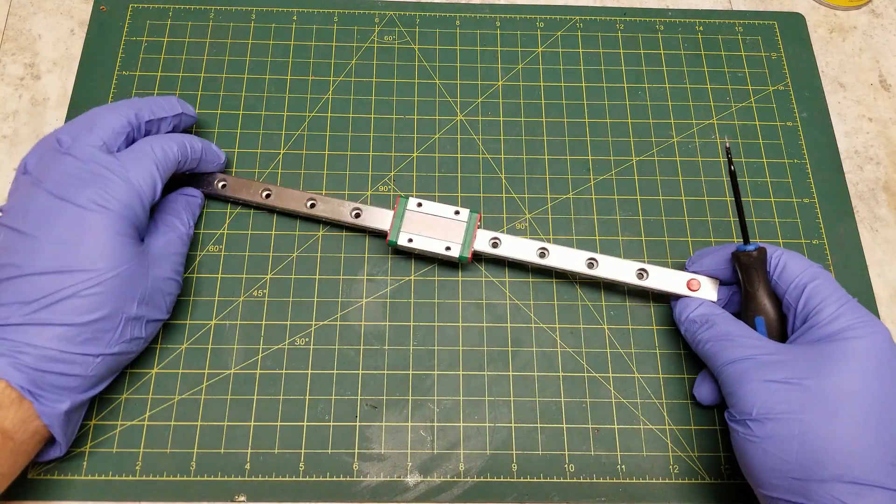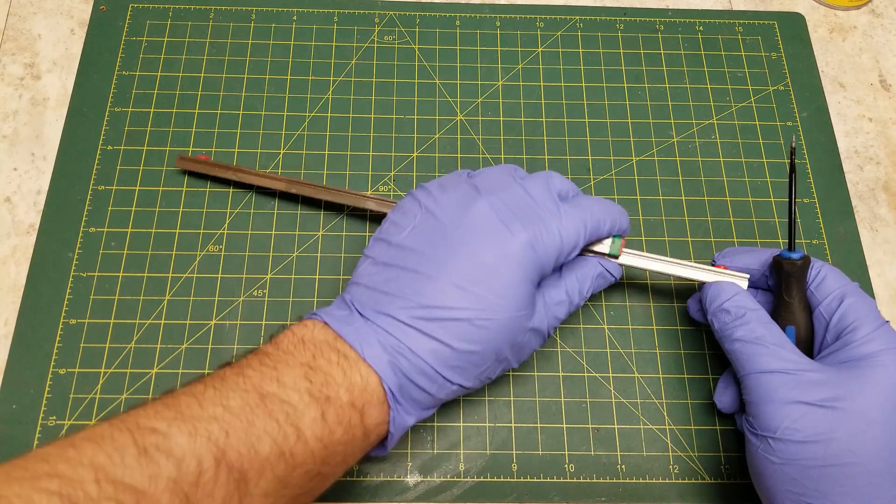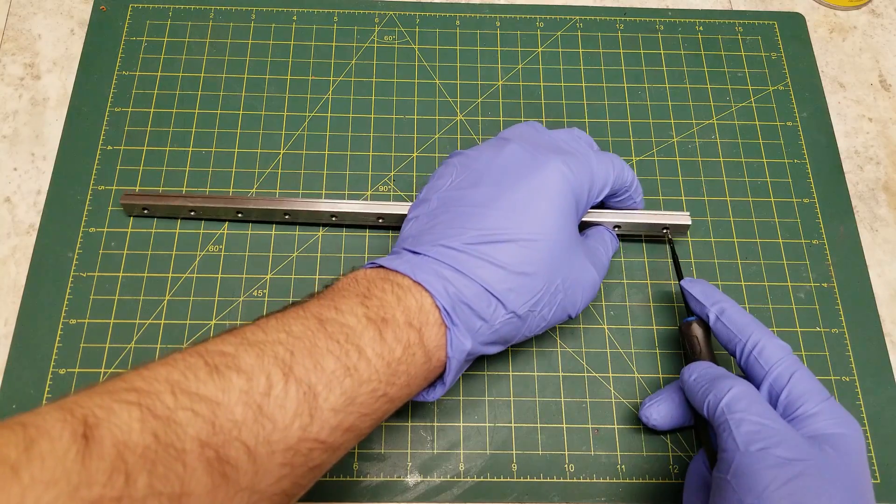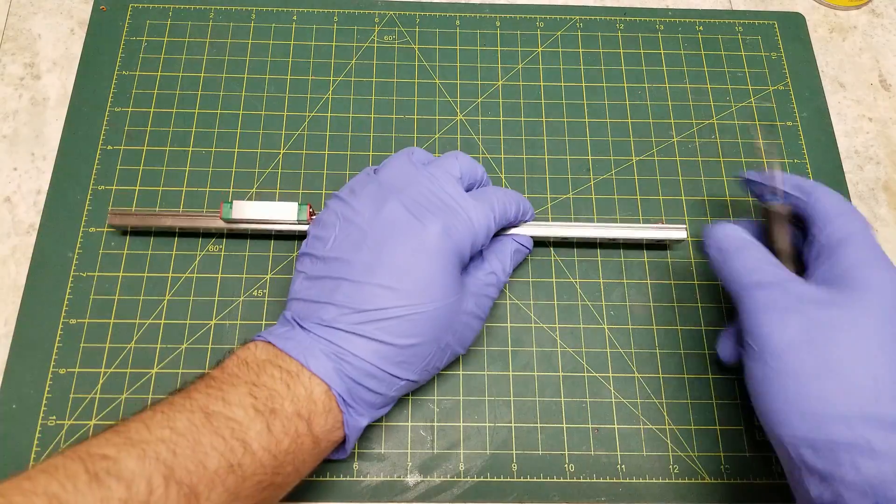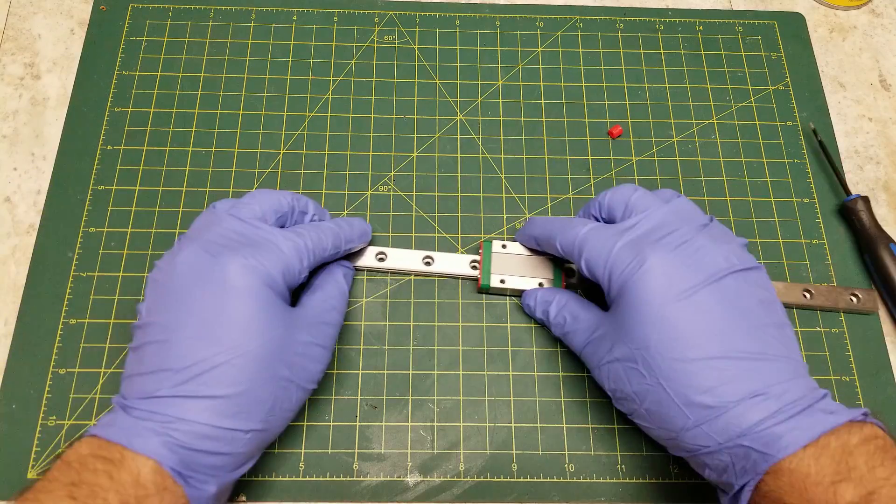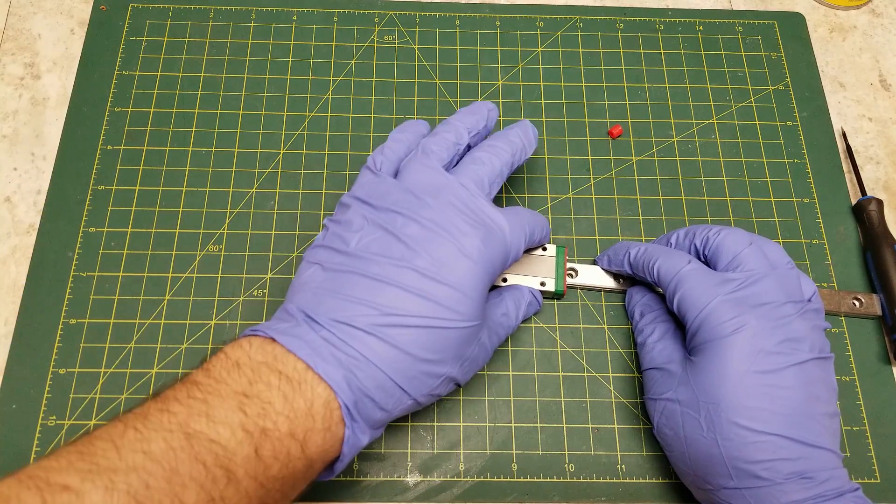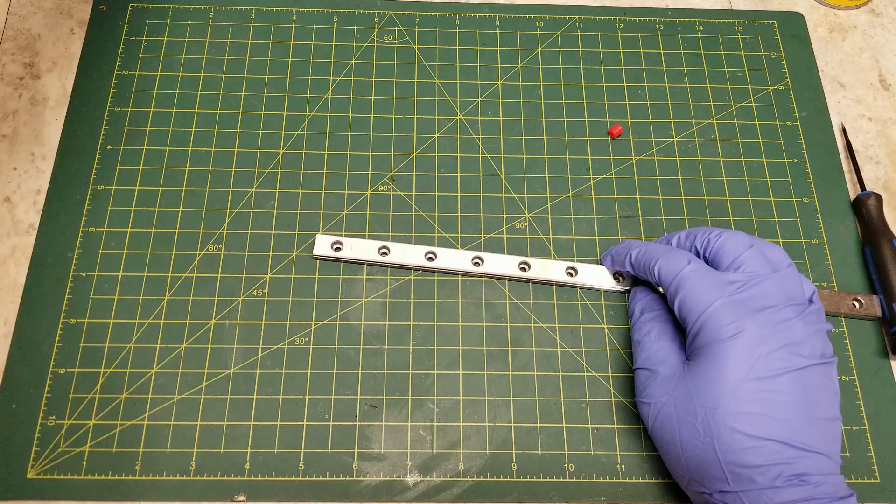So starting off, the first thing we are going to want to do is remove the carriage from the linear rail. If you have the little stoppers on the ends you're going to want to remove those now. When you go to take the carriage off the linear rail, if you have a spare rail you can slide the carriage onto that. You can print a holder for it or you can simply remove it and be careful when you reinstall it not to lose any of the ball bearings.